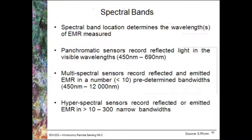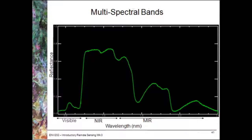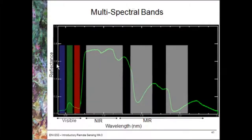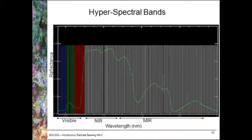Spectral band location determines the wavelength of electromagnetic radiation being measured. Panchromatic sensors record a broad part of the spectrum, whereas multispectral sensors record around ten predetermined bands. Hyperspectral sensors, on the other hand, record very narrow bands but a large number of them. Comparing multispectral to hyperspectral against a vegetation spectral signature: Landsat makes single measurements in the blue, green, red, near-infrared, and mid-infrared bands, producing a relatively coarse averaged graph. A hyperspectral sensor creates that same graph with a large number of individual narrow bands. That's the key difference — the number of bands and the width of those individual bands.